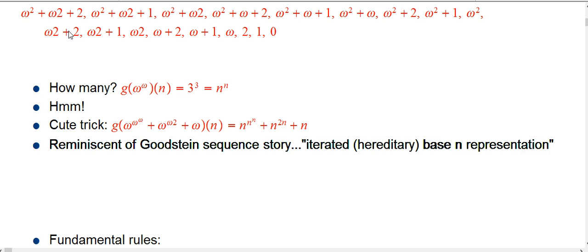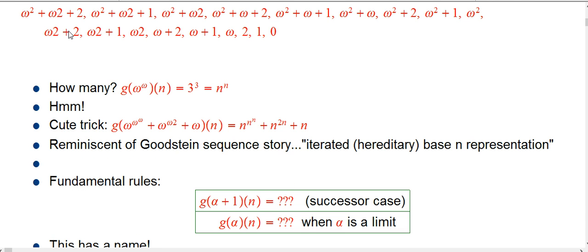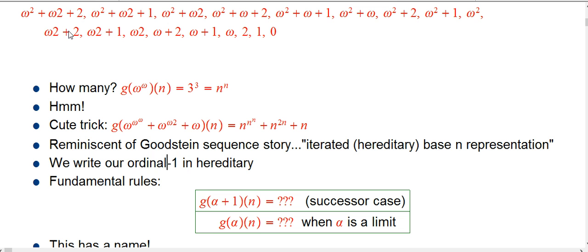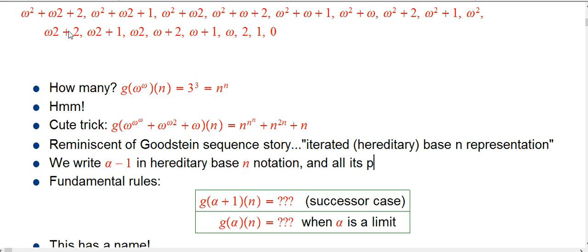So it turns out that just like with the Goodstein sequence story, we're writing our ordinal — really our ordinal minus 1 — in hereditary base-n notation and all its predecessors. That's just an ordinary finite number, and we're just decrementing by 1, 1, 1, 1 in that notation as well, where omega is a placeholder for whatever n you are interested in at the time.